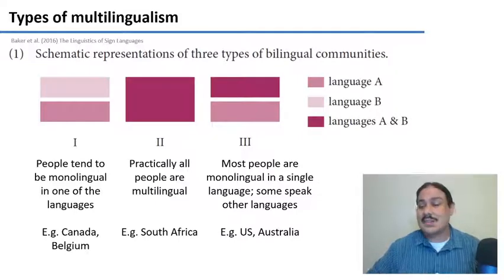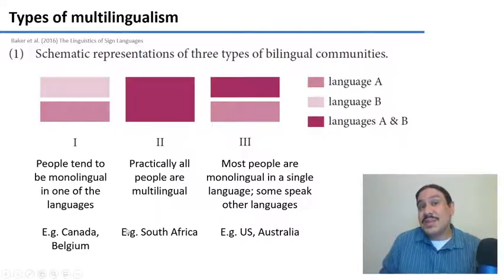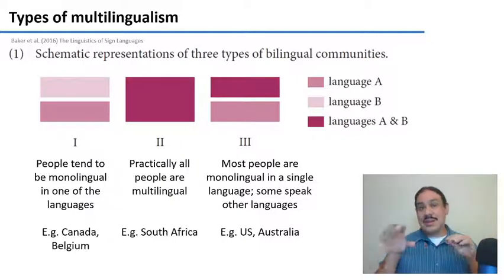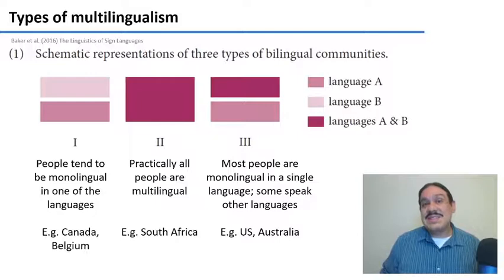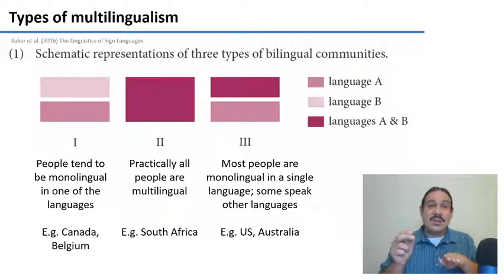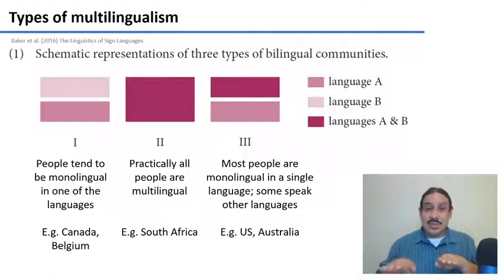There are societies where everyone is multilingual. This is the case in South Africa, which has 11 official languages — English, Afrikaans, Xhosa, and a number of other African languages — but practically everyone speaks at least two of them. So you need to make decisions about when you're going to speak the language for general communication, which might be English, and when you're going to speak your own language, like Afrikaans or Xhosa.